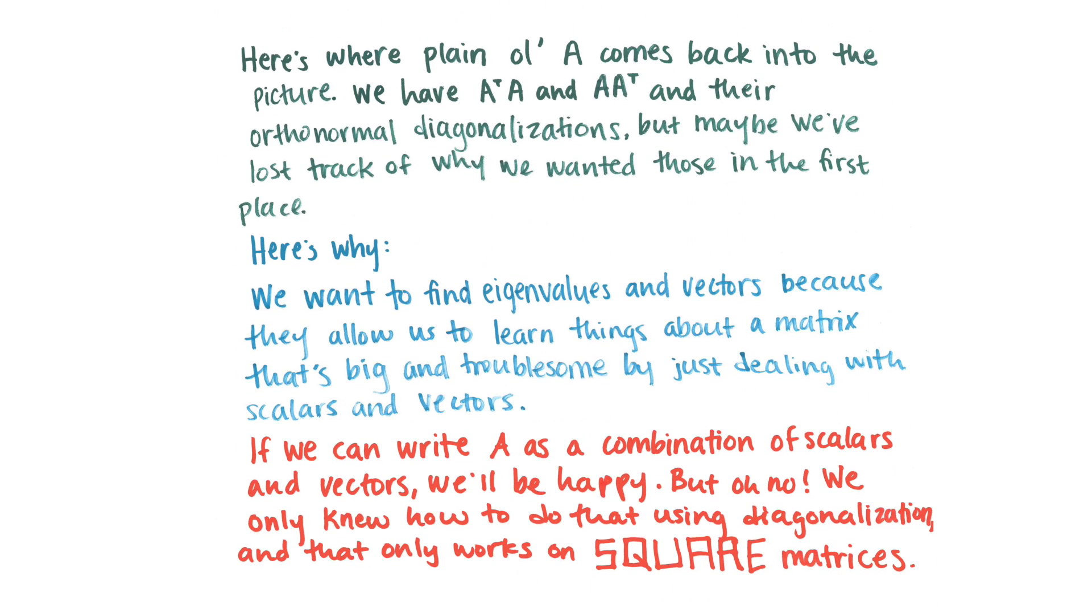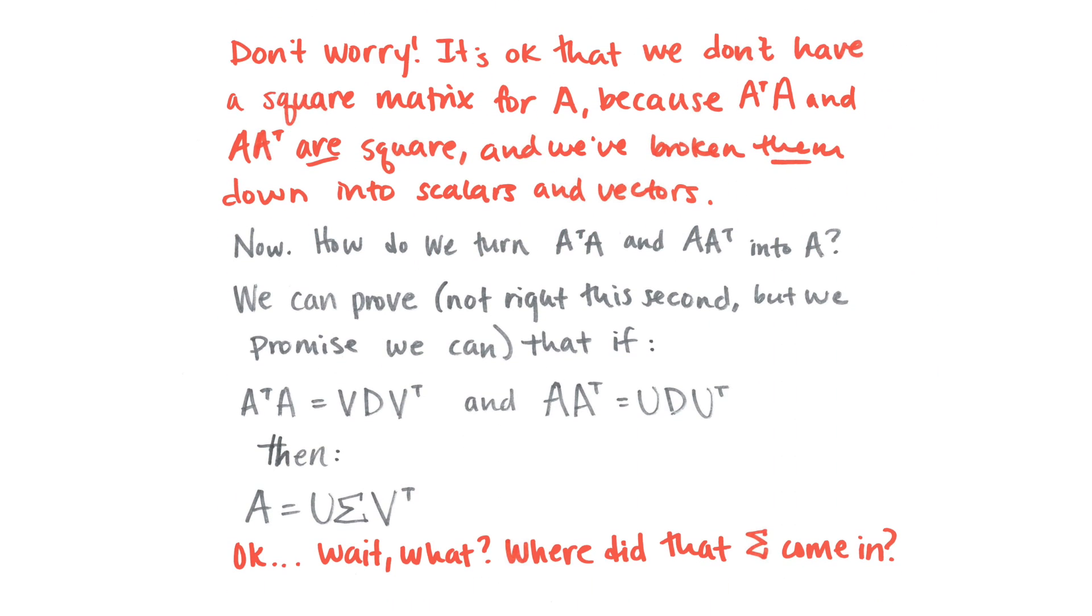Alright, so we've kind of lost track of A, but it's coming back into the picture now. We have A transpose A and we have A A transpose, and we have their orthonormal diagonalizations. But where is A in all of this? So here's where it is. We want to find the eigenvalues and vectors because they allow us to learn things about a matrix that's big and troublesome by just dealing with scalars and vectors. So we want to write A as a combination of scalars and vectors because it's big and messy, and scalars and vectors are nice and simple. But we only know how to use that using diagonalization, and that only works on square matrices, and A isn't square. But it's okay because we have A transpose A and A A transpose, and so they're square even though A isn't square, and we've broken them down into scalars and vectors. So now we just need to take A transpose A and A A transpose, and turn them into A.